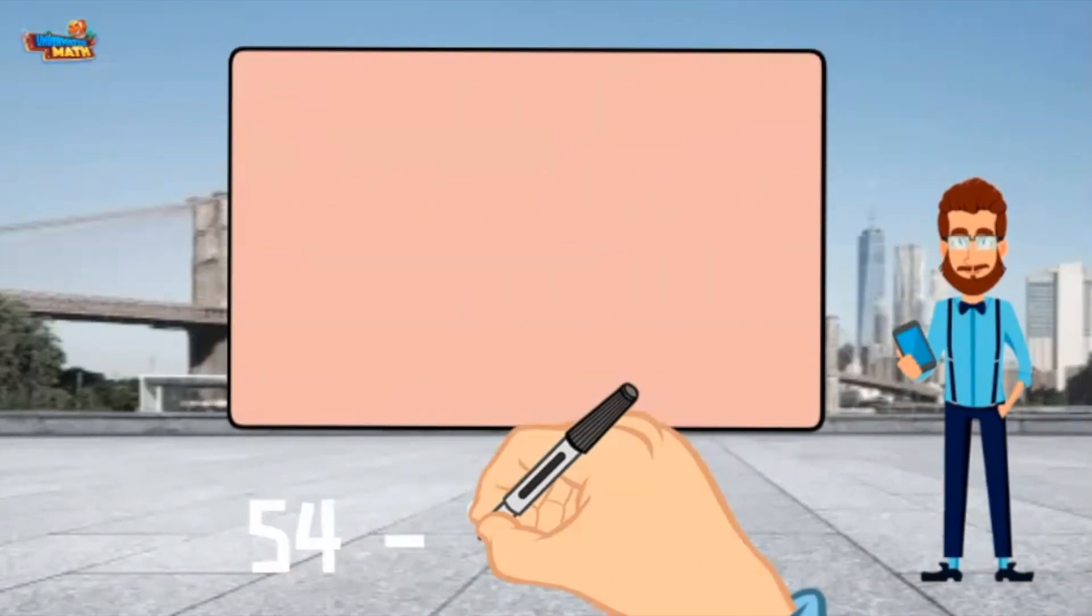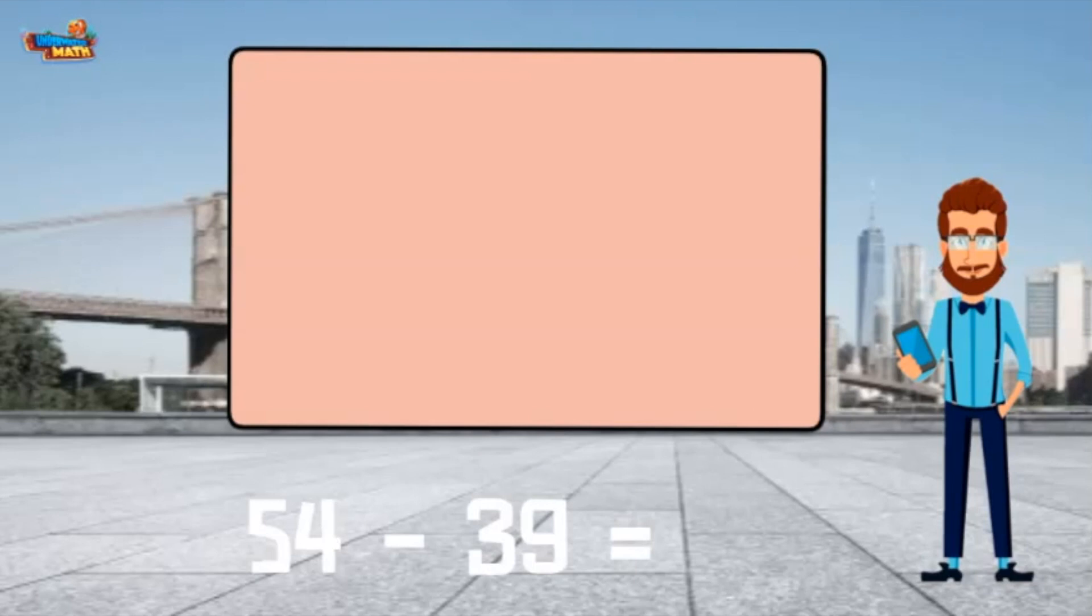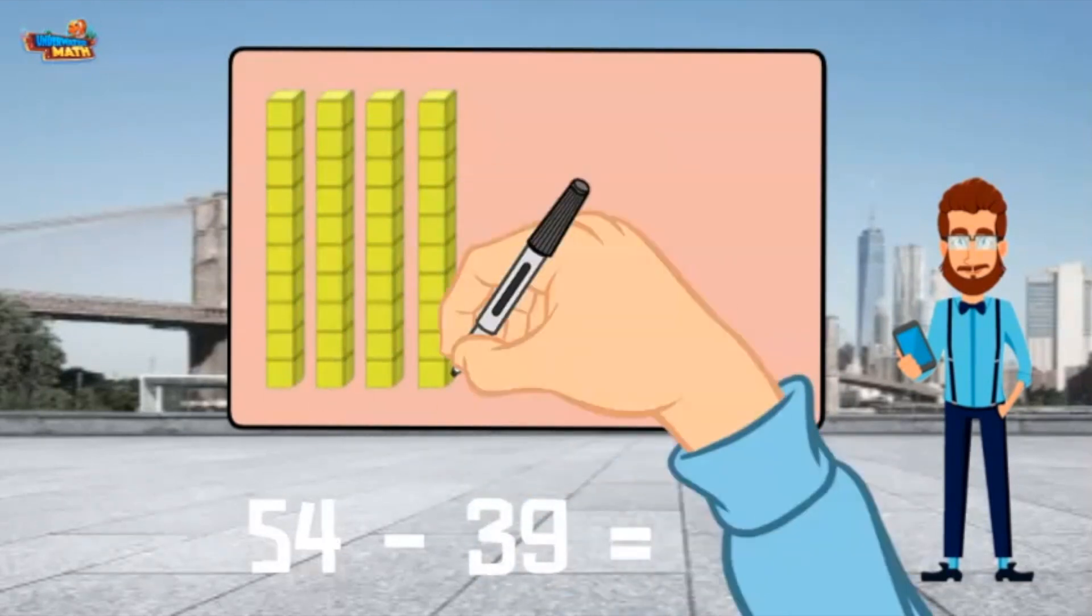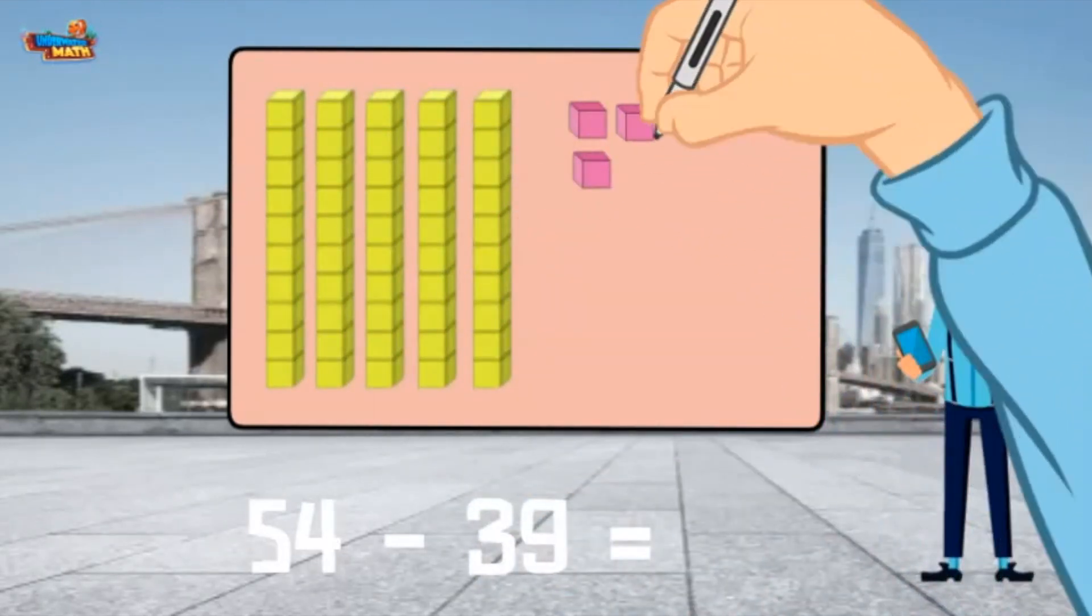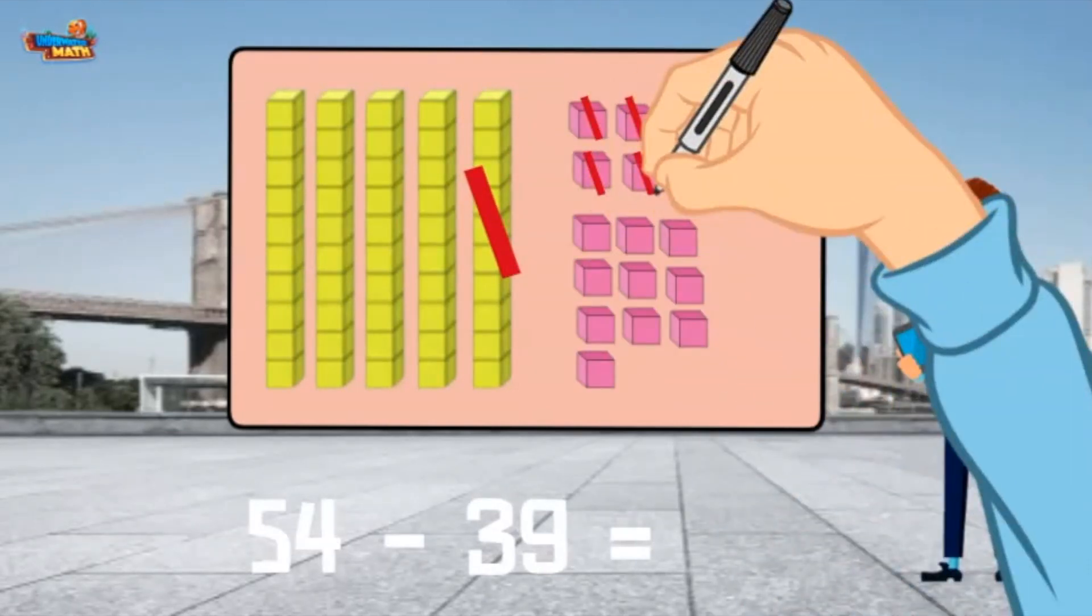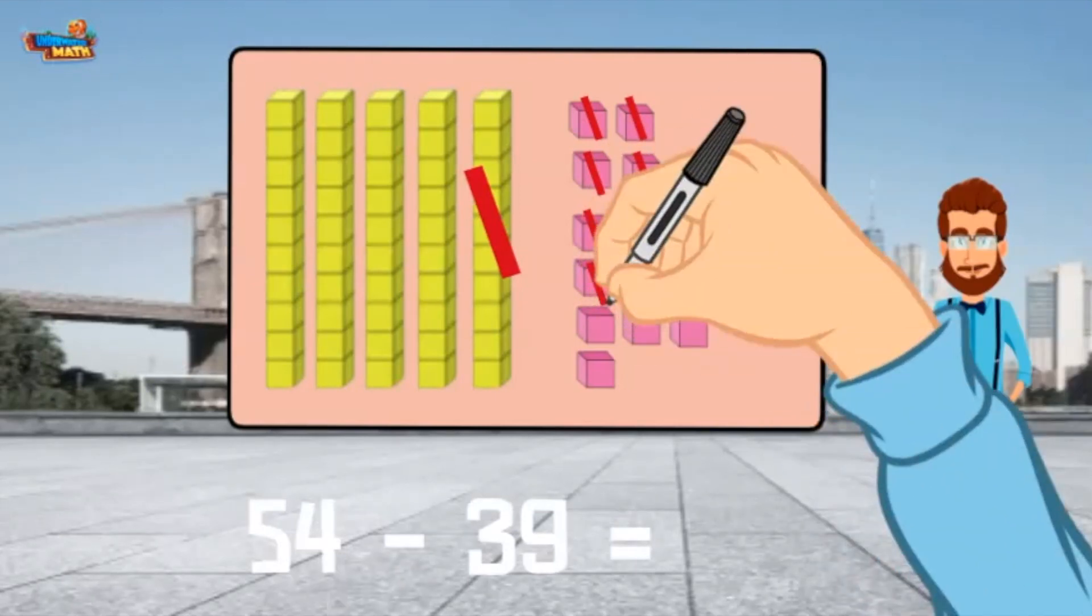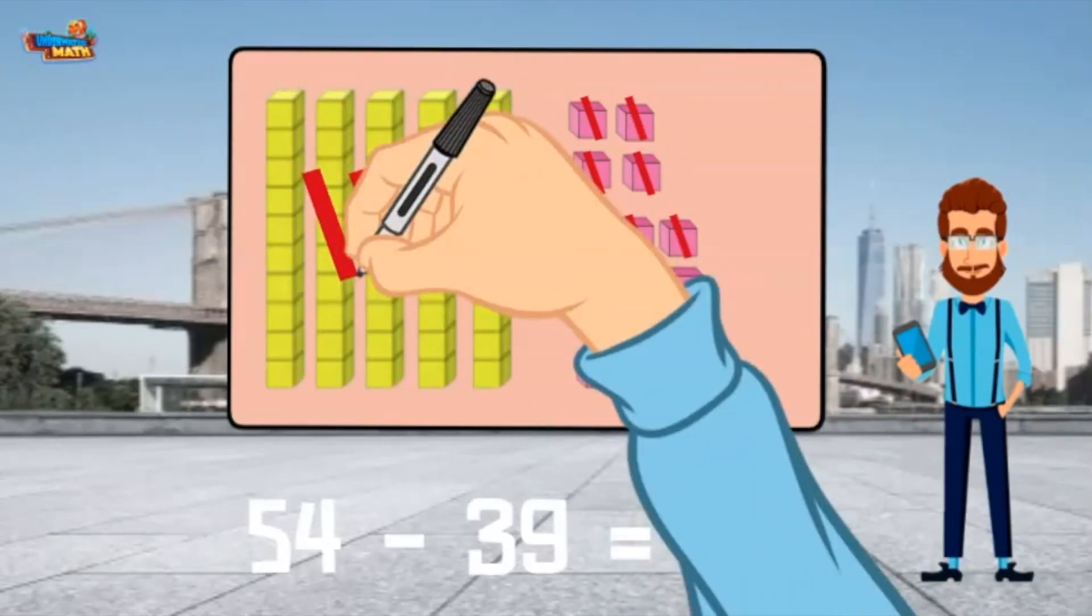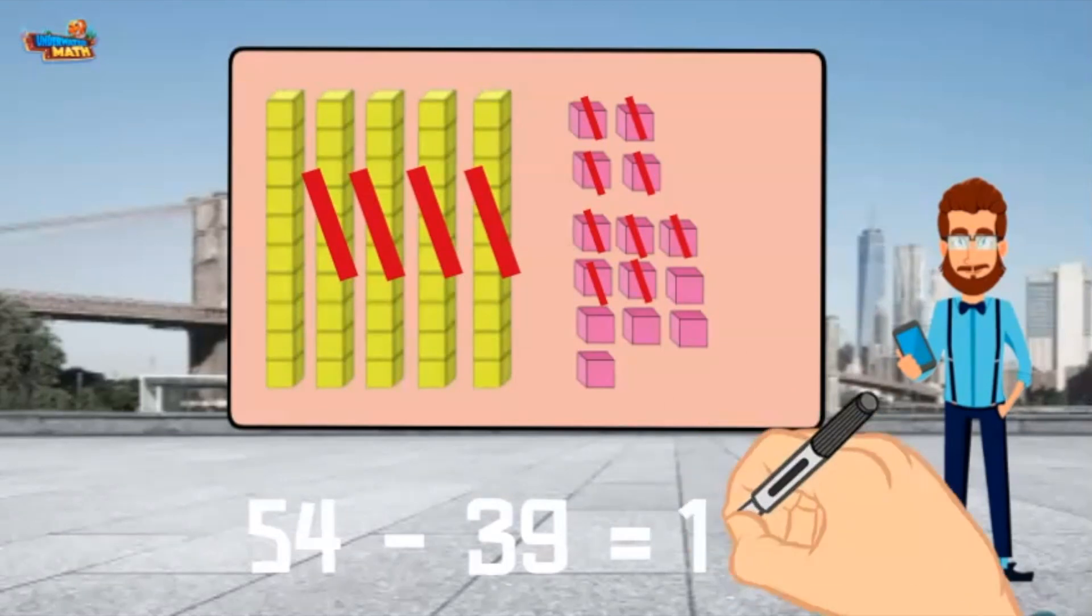Let's practice with 54 minus 39. I first model 54 using base 10 blocks, 5 tens and 4 ones. I need to cross off 9 ones first, but I don't have enough. I can exchange 1 ten for 10 ones. Now I have enough ones to take away 9. Next, I take away 3 tens. I am left with 1 ten and 5 ones. 54 minus 39 equals 15.